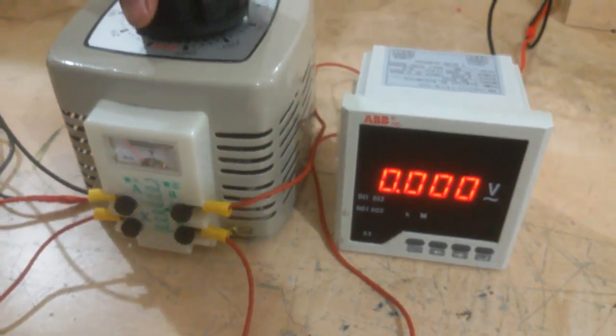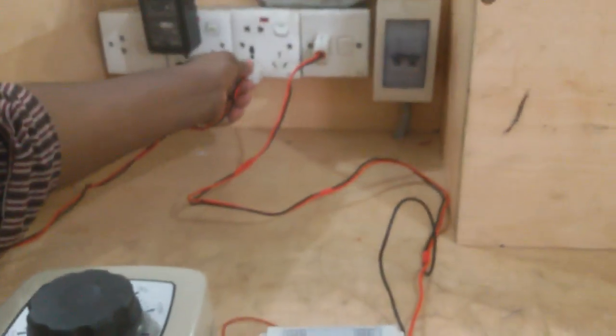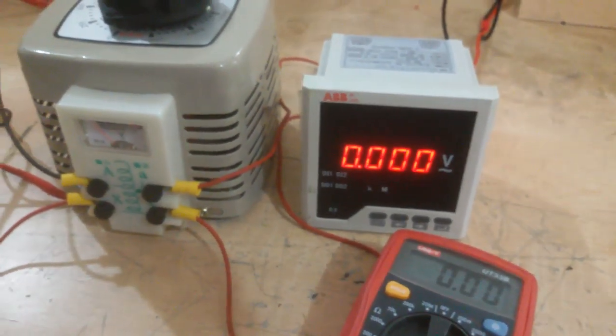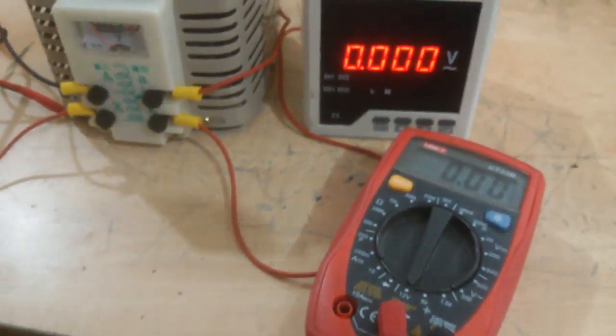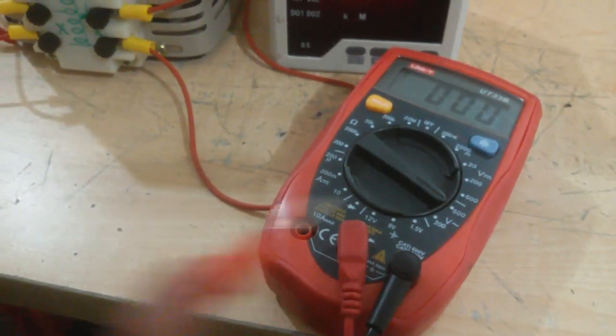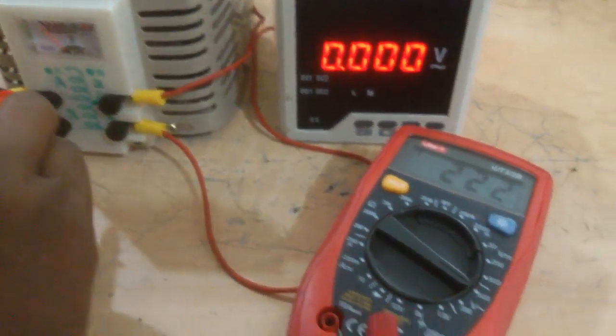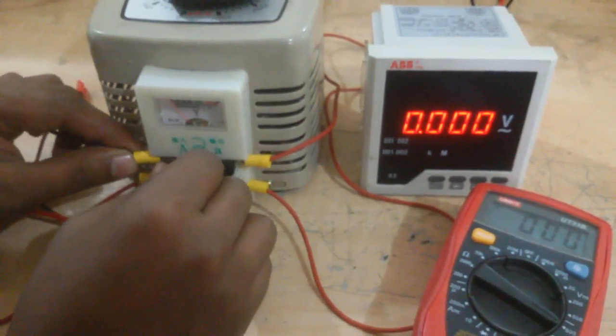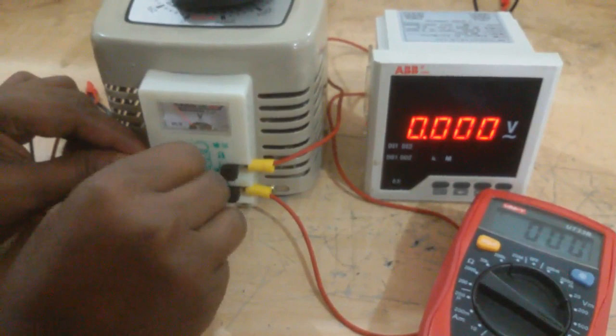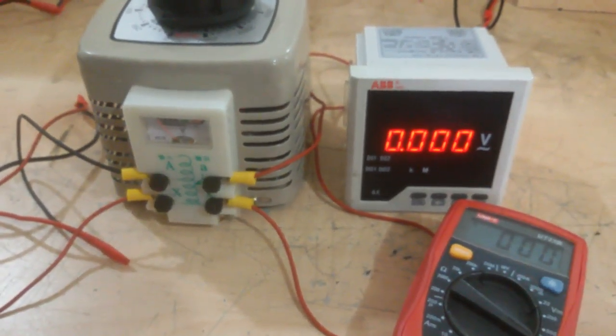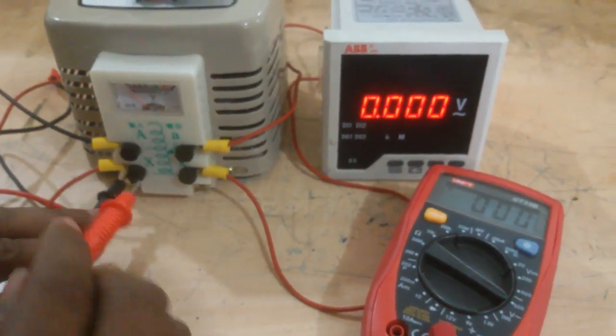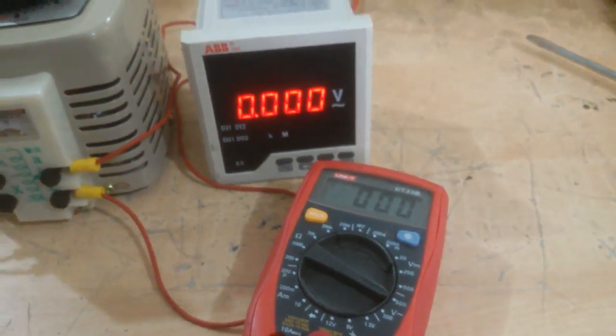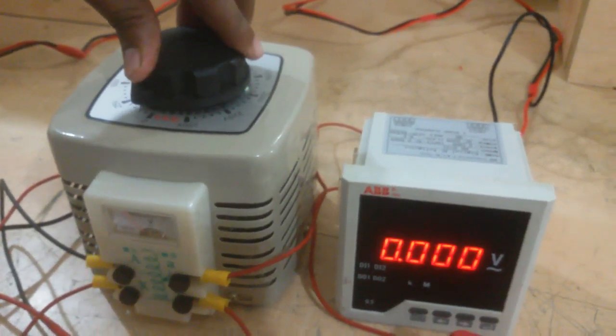And this knob is at zero position. Now I supply power. I supply power. First I measure this supply voltage. I take a different ABB meter, digital ABB meter, and select this meter AC voltage 500. Now I measure input supply. This is also loose, now I again connect this. Again I supply power.